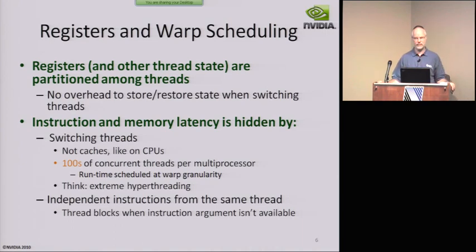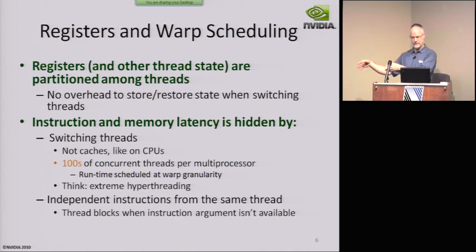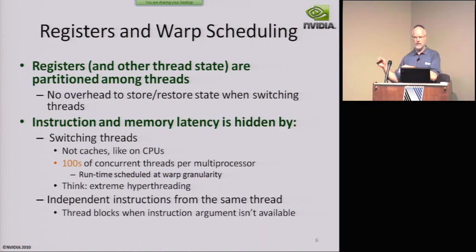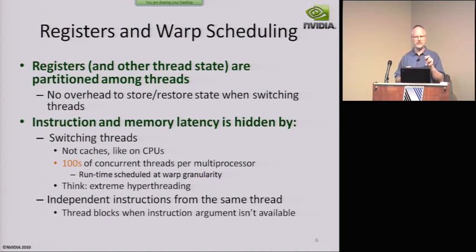Once a block of threads has been launched and its space has been allocated in the register file and thread space on the multiprocessor, it does not leave until it's finished executing. There's no context switching in the CPU sense. We don't store and restore state — we simply choose a different block or warp to execute from. It's all resident; it all stays there.